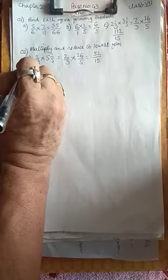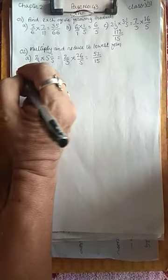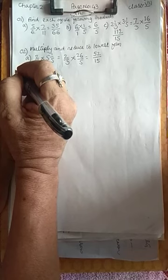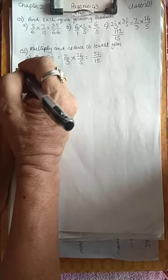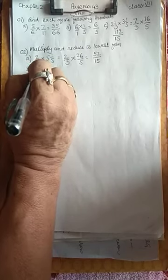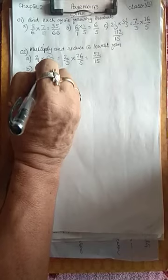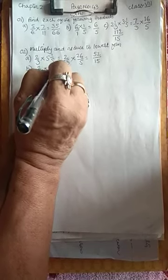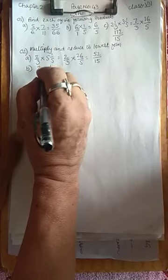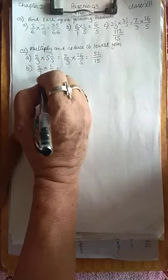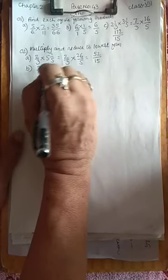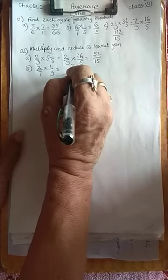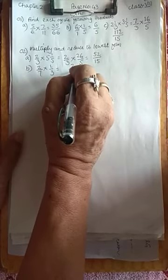Second problem: 2/7 into 1/3. You need to multiply both numerators and denominators. 2×1 = 2, and 7×3 = 21. Answer is 2/21.